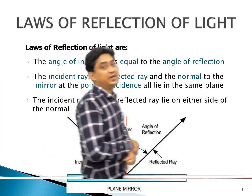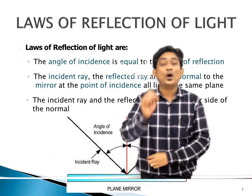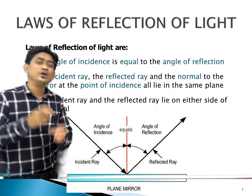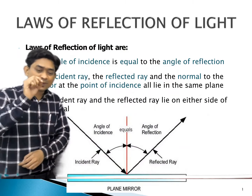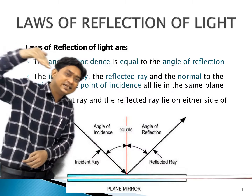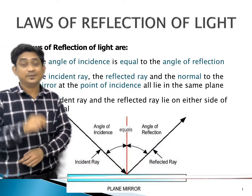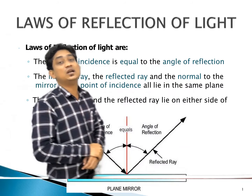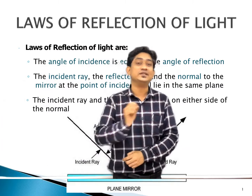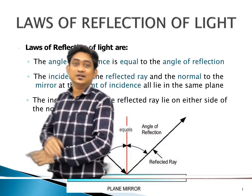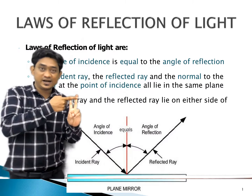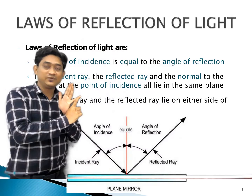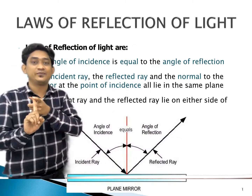One more important definition is here — point of incidence, which is denoted by the symbol O. What is the point of incidence? A particular point where the incident ray falls on the mirror is called the point of incidence. So we have: incident ray, reflected ray, normal, angle of incidence, angle of reflection, and point of incidence.